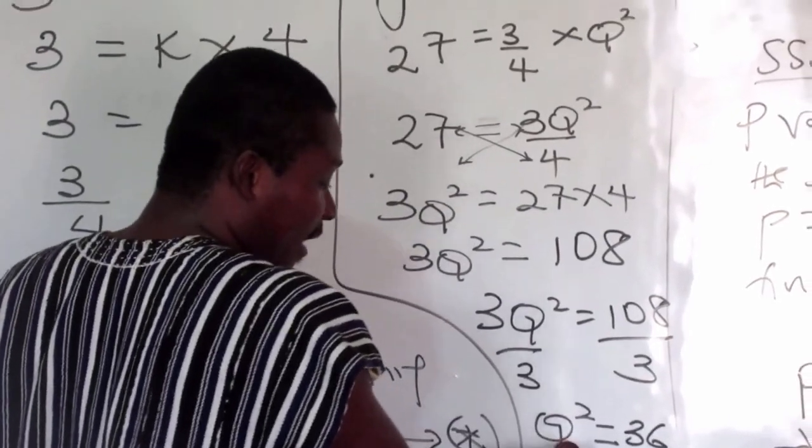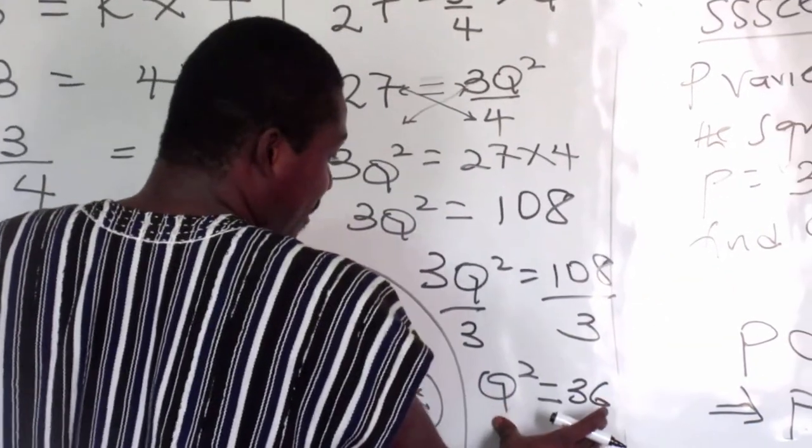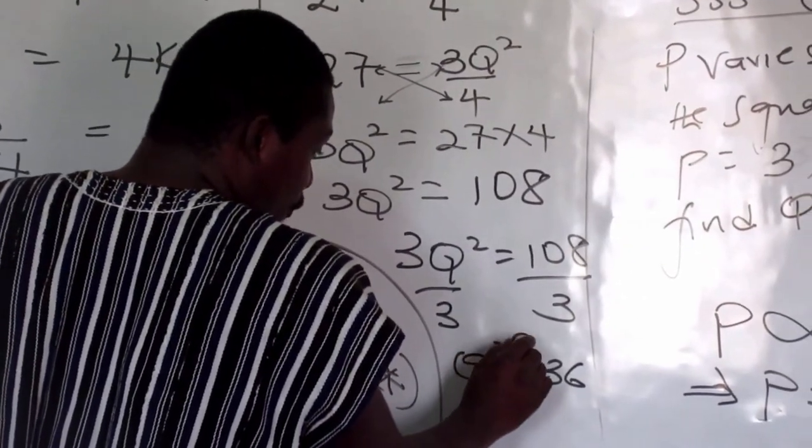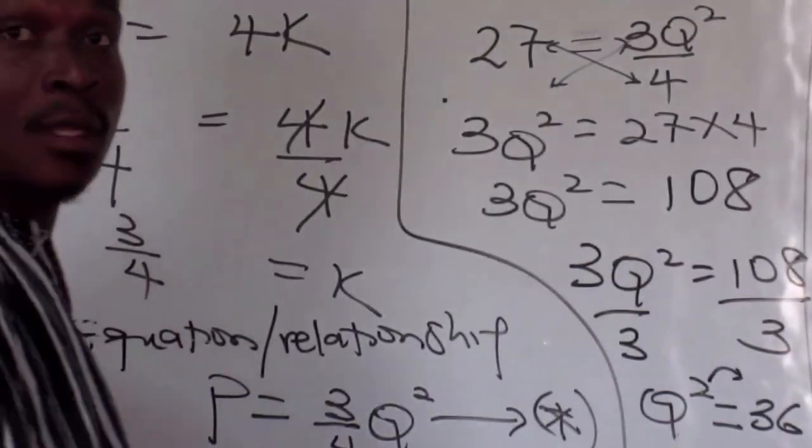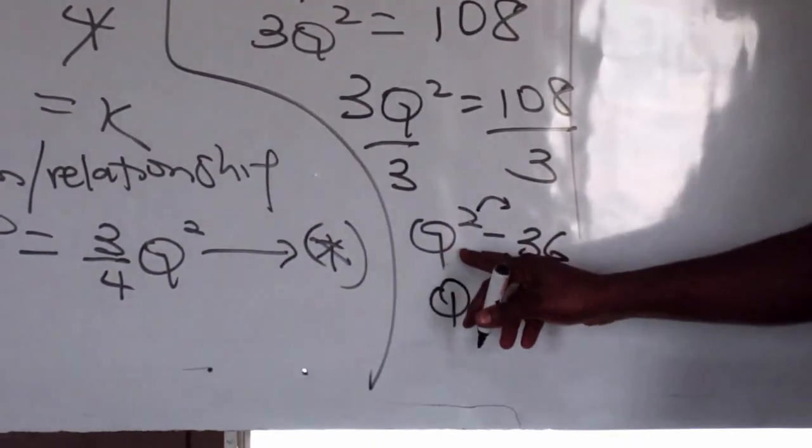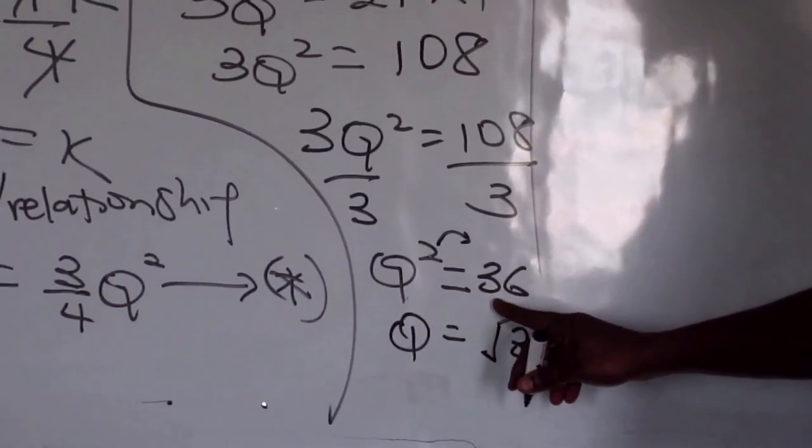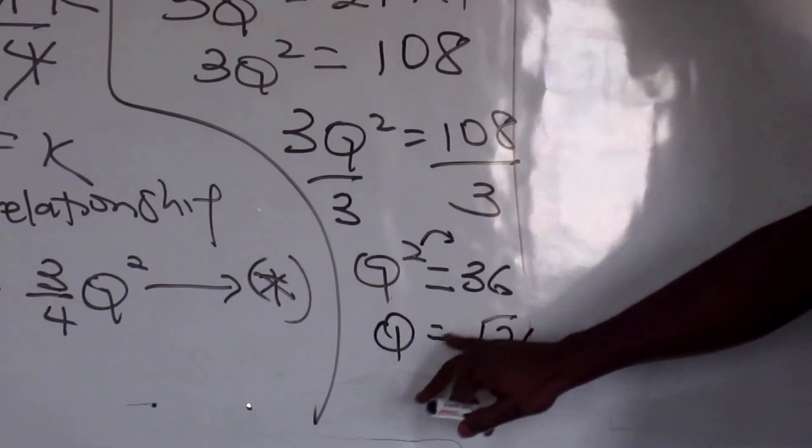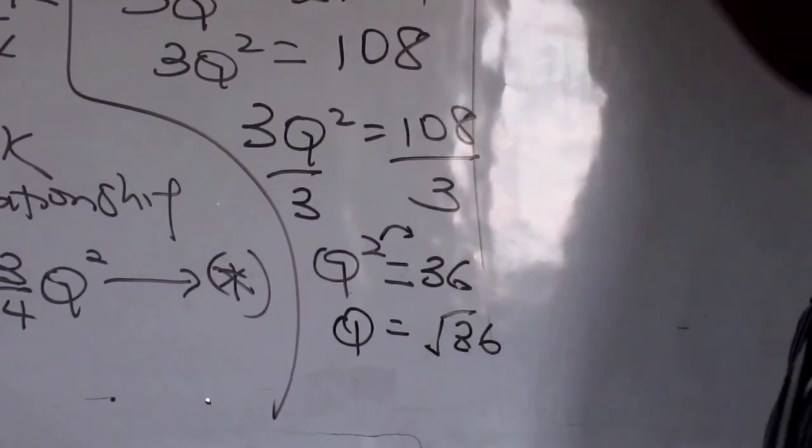So you'll be dividing through, 3Q squared, because 108 over 3. So what I'm going to get for Q squared, that is 108 divided by 3. What do you get? 36. Good, so this is 36. Now remember, we are looking for Q, not Q squared. So how do you get Q? This two can form a root. So Q squared equals 36, so that is Q equals root 36. And what is root 36?